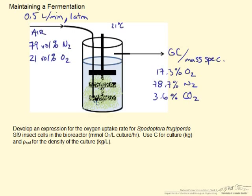This screencast is going to look at a fermentation of a cell line. What we are going to do is try to determine the oxygen uptake rate in mmol per liter culture per hour. You are given the following information about this bioreactor. We are feeding air into the bioreactor at 0.5 liters per minute and at 1 atmosphere.